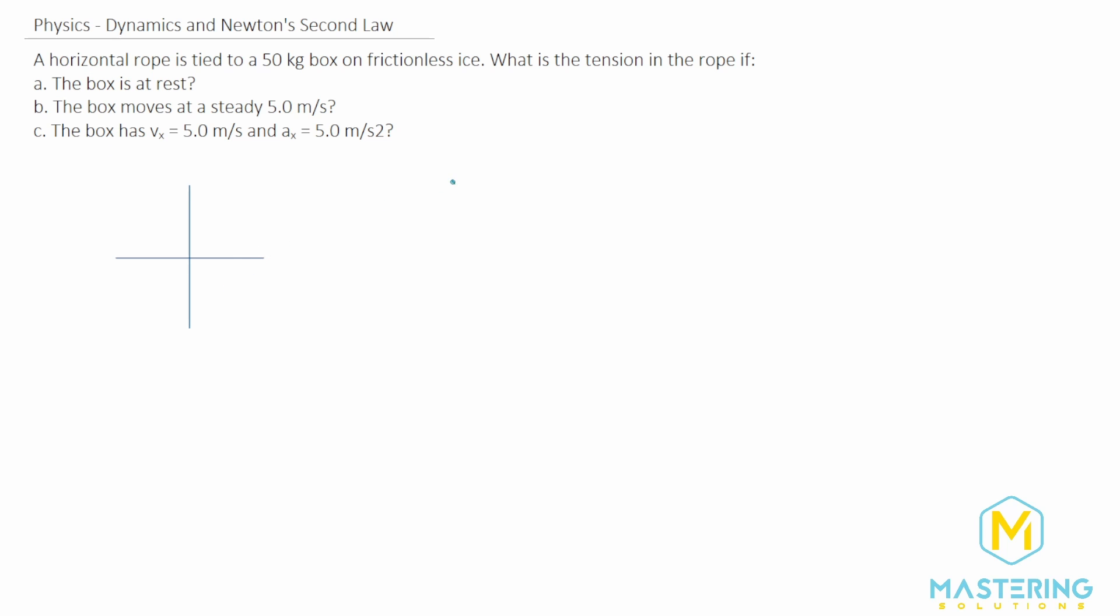So for part A, we need to figure out what the tension in the rope is if the box is at rest. Let's write the formula for forces, which of course is Ma, and let's draw the free body diagram here. So we'll have tension here in the rope, and then obviously we'll have a normal, and then weight, and then the object right there at the box.